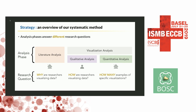Each of these different phases answers a different research question. The literature analysis phase was about figuring out why people are visualizing data in the first place — for example, a hospital outbreak. The visualization analysis phase was first, in the qualitative part, to figure out how people are visualizing data, and then to quantify how many examples there are of specific data visualization strategies.